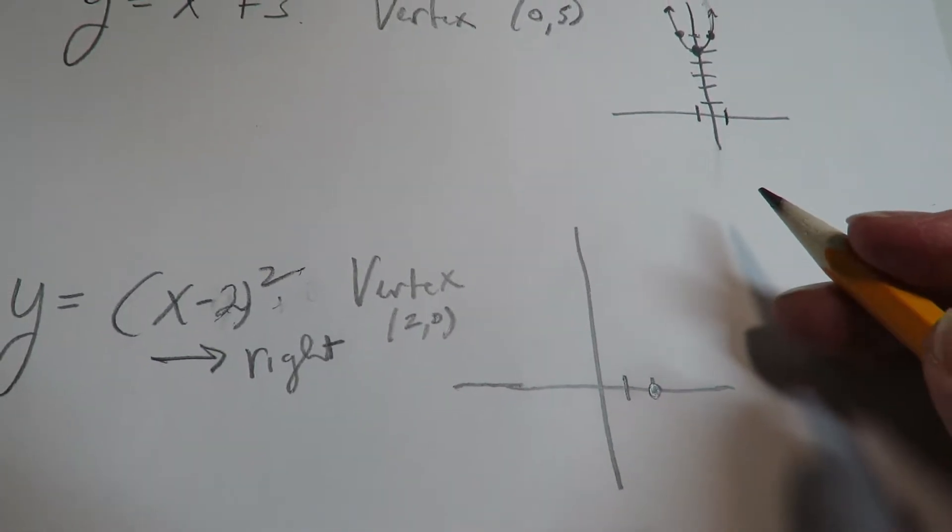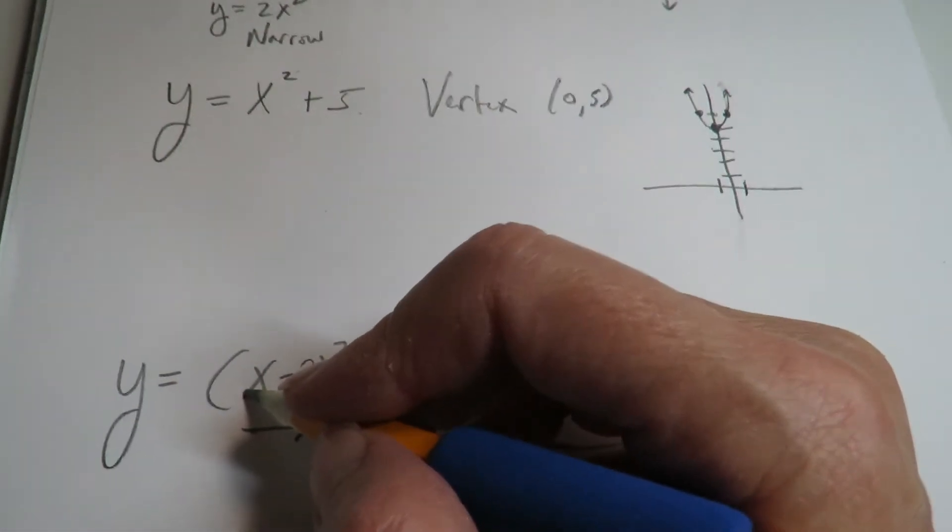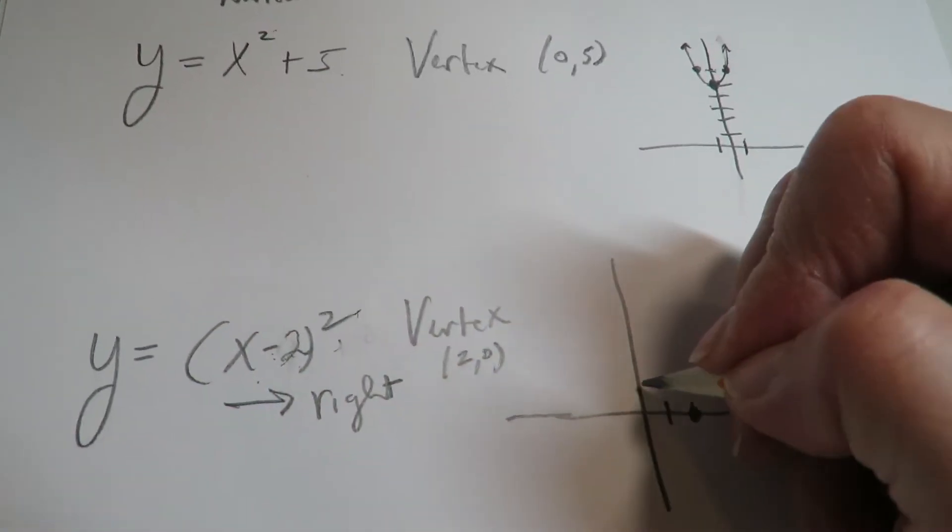Okay, so there's my vertex. If I then let x be 0, if I let x be 0, this is negative 2 squared or 4.